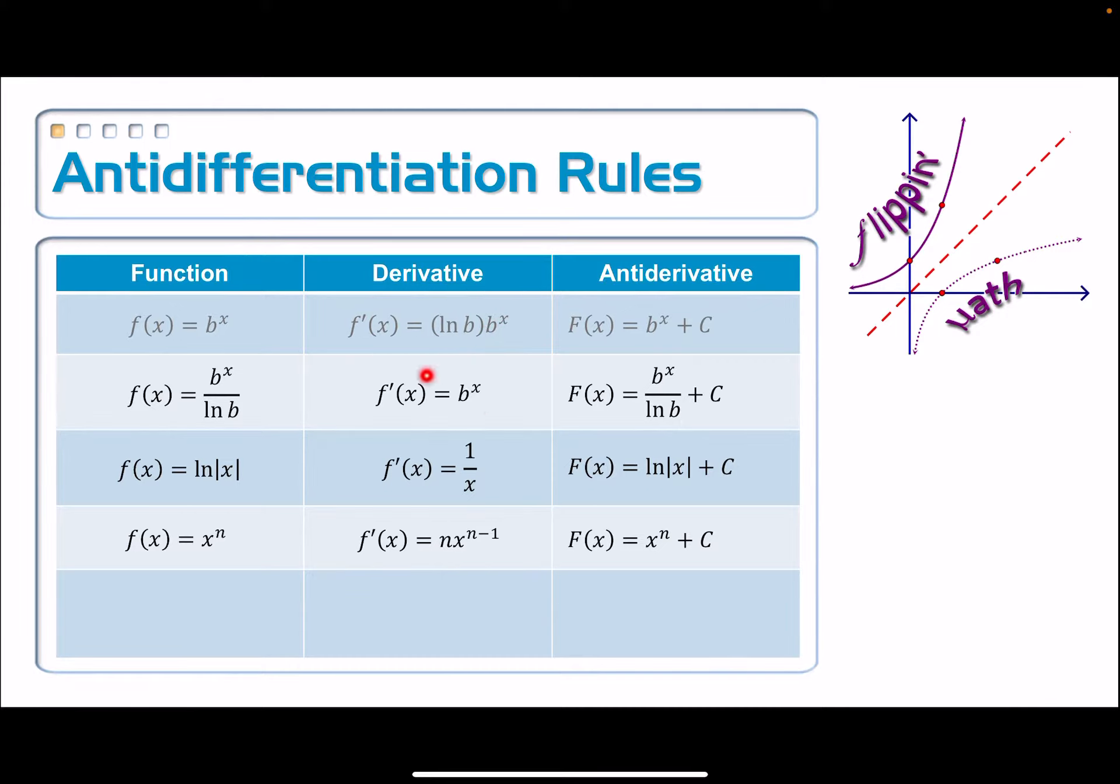Instead, it was just b to the x and so we had to figure out how to make it work with the derivative rule. So the same thing is going to happen here. You're not going to have your derivative function, your differential equation look like this. It's actually going to look like x to the nth power.